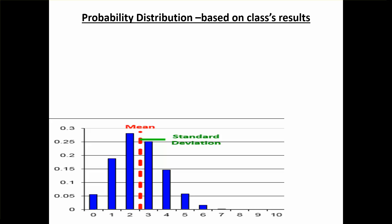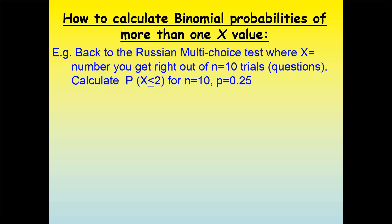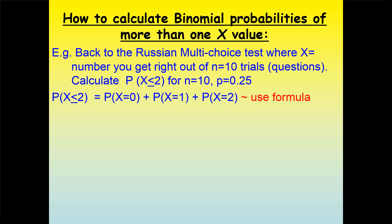We want two or less questions correct. In mathematical notation we write that as P(X ≤ 2) — the probability that the number correct is less than or equal to two. There are ten trials, that's the questions, and p is the probability of getting each question right by chance, which is 0.25, one in four.